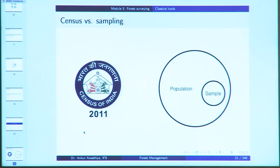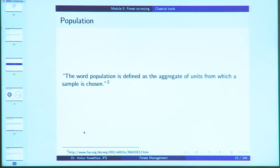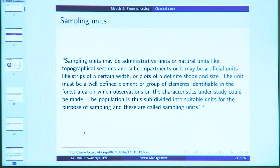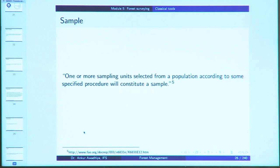Next we looked at basics of sampling. There is a difference between a census and sampling: in a census you measure everything, while in sampling you measure only a small portion of the whole population. The objective of sampling is to secure a sample which will represent the population and reproduce the important characteristics of the population under study as closely as possible. Population is the aggregate of units from which a sample is chosen, and a sampling unit is a subdivision of the population for the purpose of sampling. A list of all sampling units is called the frame.